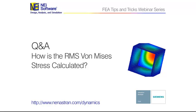Another question that came through: you went through a little bit on your presentation, but there was a question about how we calculate the random response RMS von Mises stress. Do you have any insight on that?